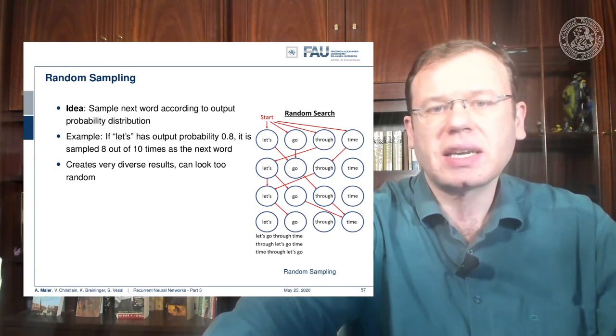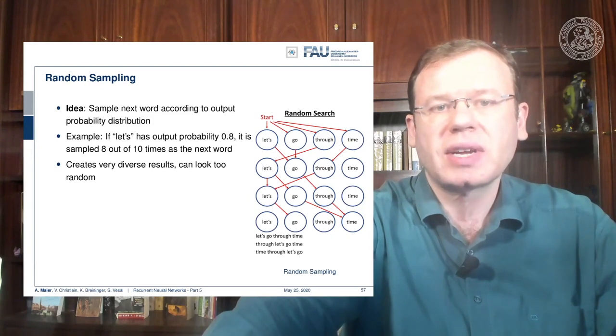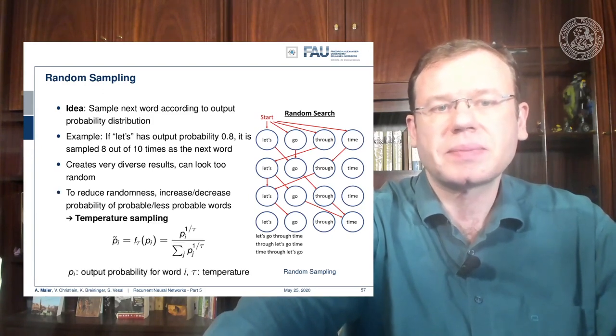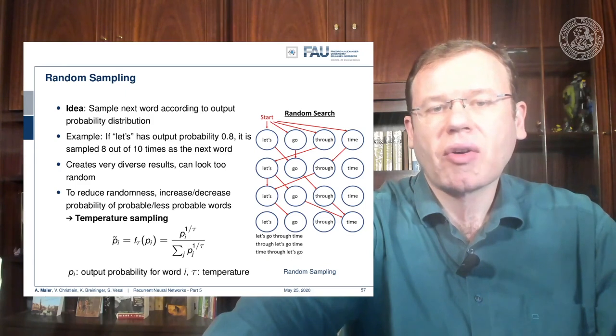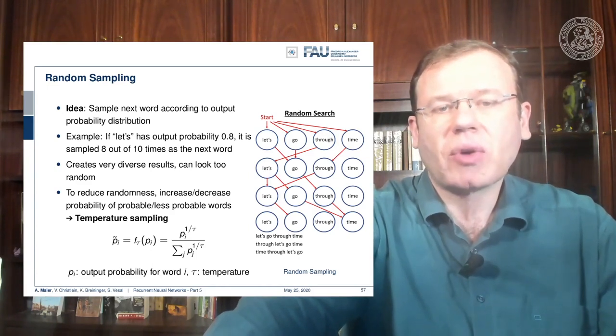This creates very diverse results and it may look too random. So you see here we get quite diverse results in the sequences that we're generating. There's the randomness that you can observe in the generated sequences. To reduce the randomness, you can increase or decrease the probability of probable or less probable words, and this can be done with temperature sampling. Here you see that we introduce this temperature tau that we use to steer the probability sampling.